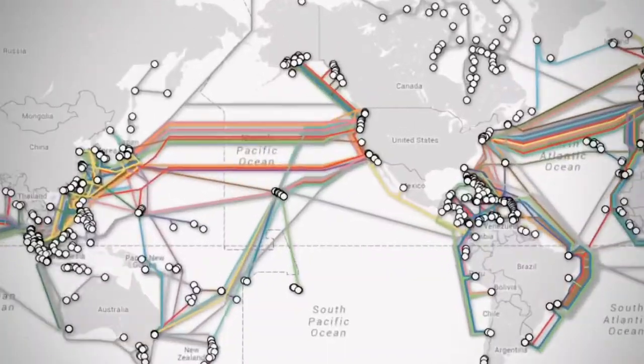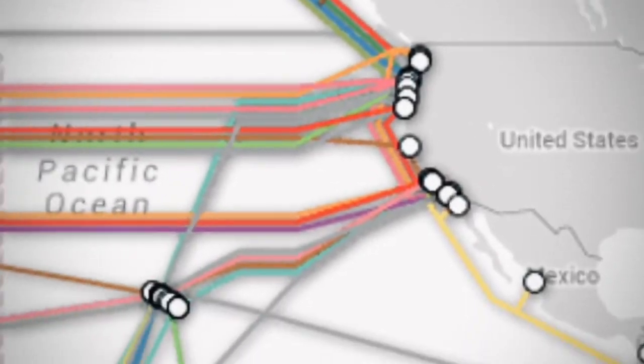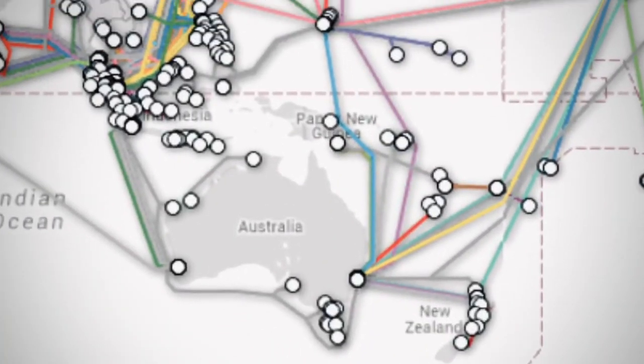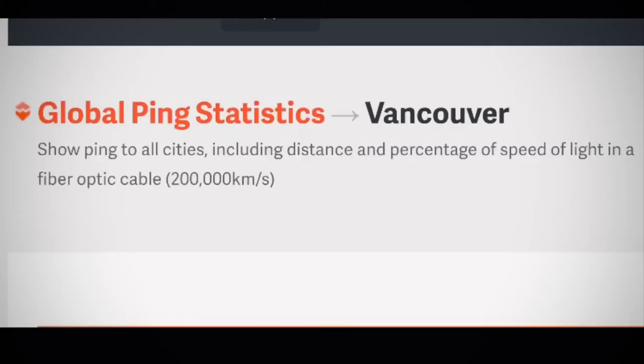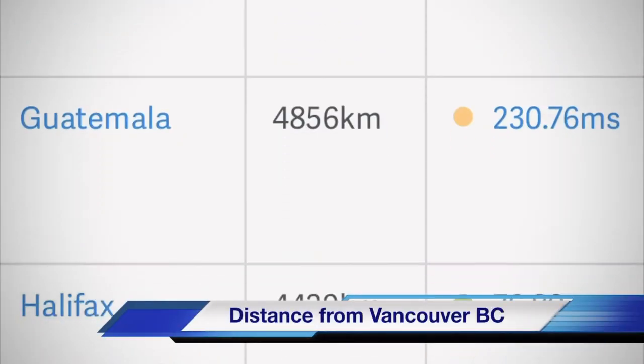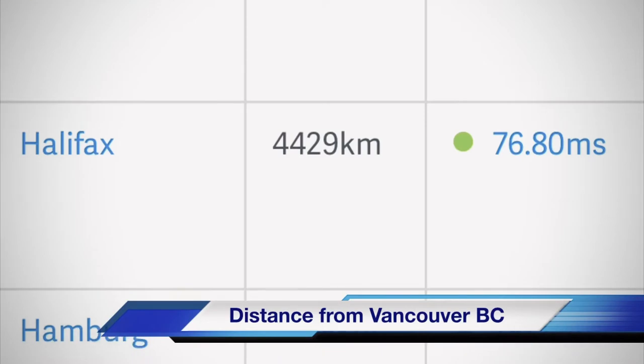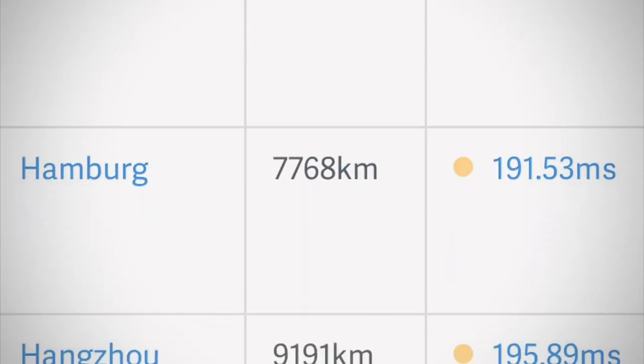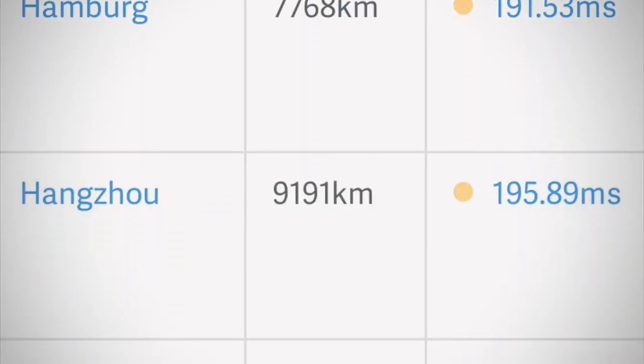Let me explain latency and the speed of light problem and how they defeated it. When you send a signal around the world to another part of the globe, it takes hundreds of milliseconds for that signal to get there, because no matter how fast it goes, the speed of light only goes so fast. If you're trying to compute across halfway across the globe and the computer is processing thousands if not hundreds of thousands of instructions every second, a whole half a second is a lifetime to a computer.